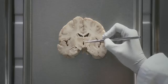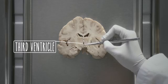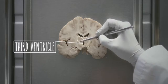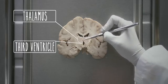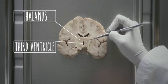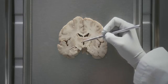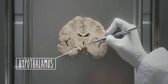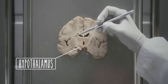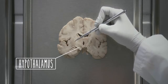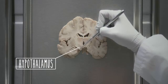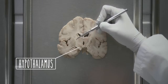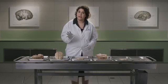This is a coronal section through the brain. This is the third ventricle. You can identify the thalamus on either side of the third ventricle, and underneath the thalamus is the hypothalamus. It extends laterally to these descending fibre bundles, which are part of the internal capsule.